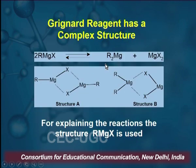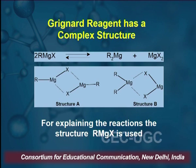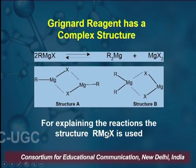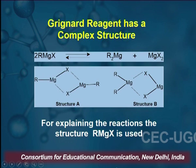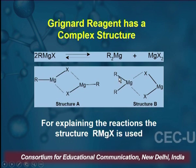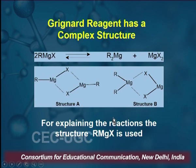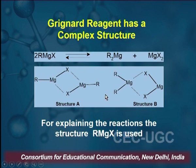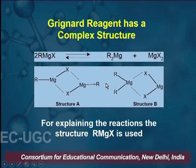Grignard Reagent has a complex structure. The moment it is formed, it has a complex equilibrium: 2 RMgX is in equilibrium with R₂Mg plus MgX₂, as revealed from structure A. Structure A is equivalent to RMgX, and structure B is R₂Mg. For explaining reactions, structure RMgX is used, and literature reports that most of the time the structure is RMgX — that is structure A.